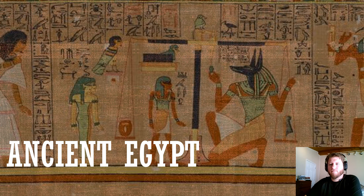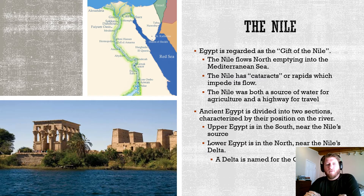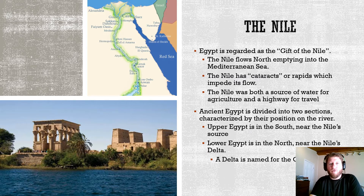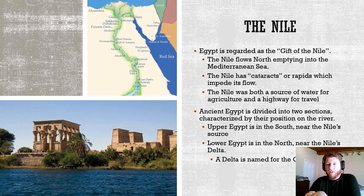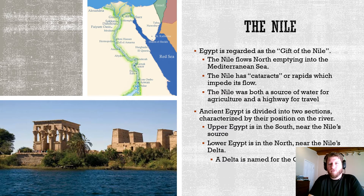Starting with Egypt's geography: Egypt is located in northeastern Africa, as the map in the upper left shows, and Egypt is often regarded as the gift of the Nile. If you think about Egypt as a country, the people living there would not be able to exist without the Nile River. The Nile is the life source of Egypt — the beating heart of Egyptian civilization, both in ancient times and in modern times.